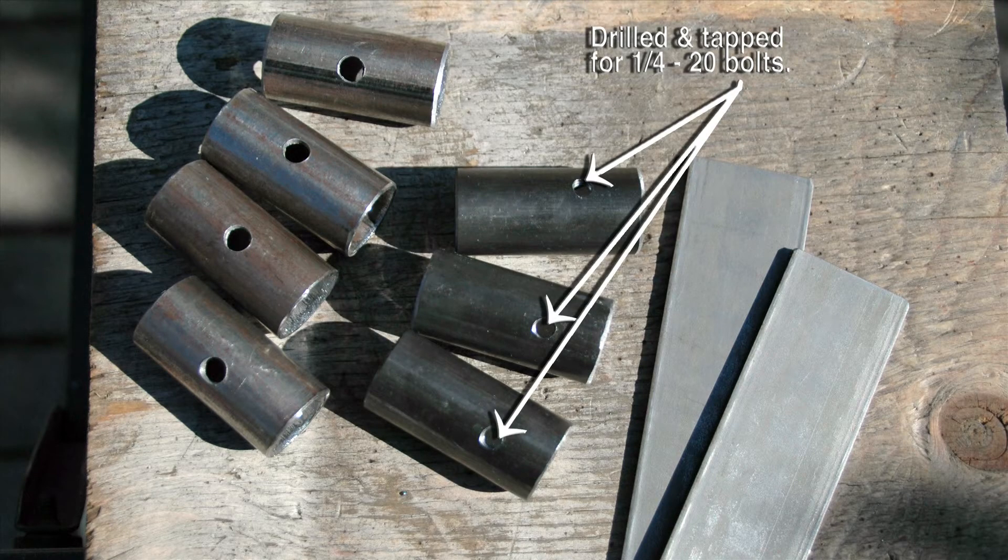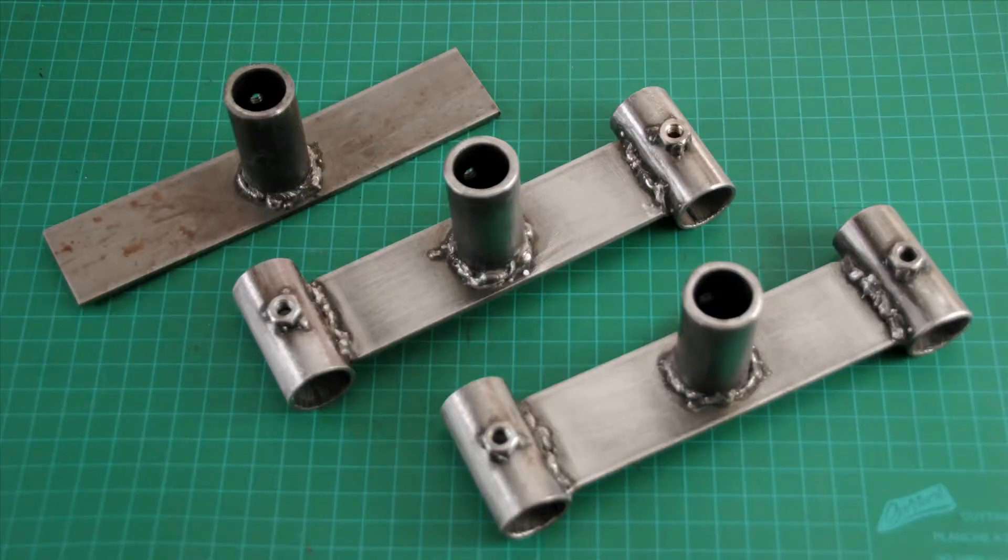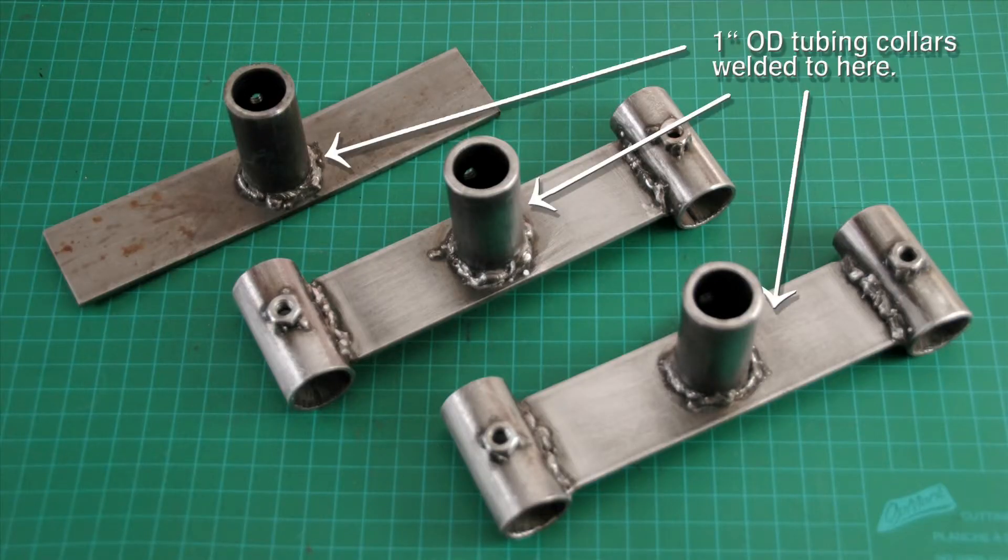The three, two inch long mounting tubes, were drilled and tapped for quarter 20 bolts, and then welded to the bottom center of the flat bar brackets.